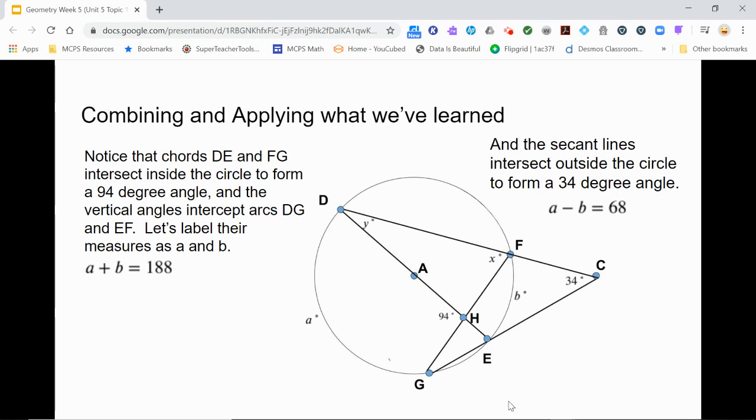Adding those two equations together gives us the equation 2A equals 256. So A equals 128. Since A plus B equals 188 and A is 128, B must be 60.